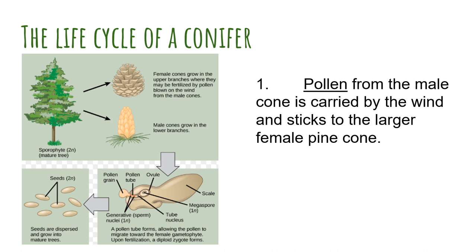We're going to go through the life cycle of the conifer in steps, just like we did for the flower. Step one: pollen from the male cone is carried by the wind and sticks to the larger female pine cone. What's interesting is this male pine cone produces the pollen, just like the anther, filament, and stamen of the flower, and then they release their pollen into the wind. Pollen is just very tiny little specks — sometimes you see it builds up and looks kind of like yellow dirt on your car or on furniture outside. They're super small and are carried by the wind. That's why it's important for these female pine cones to be located at the top of the tree, because they want to be somewhere where the wind can easily drop off the pollen grains.